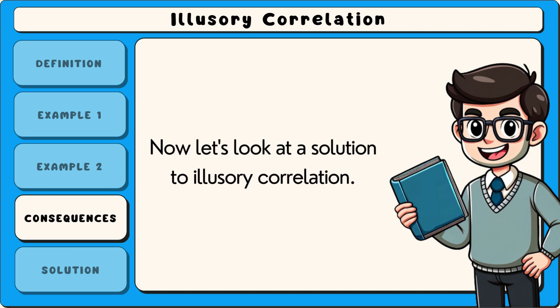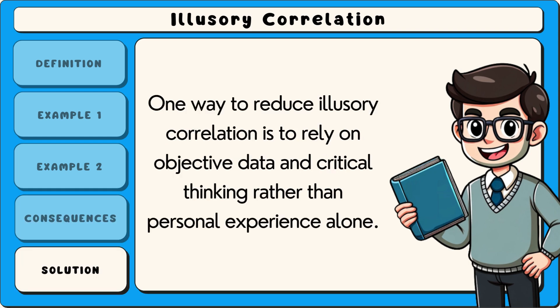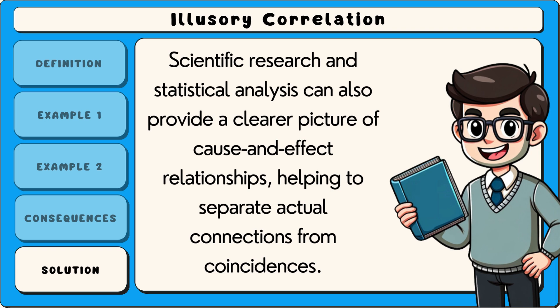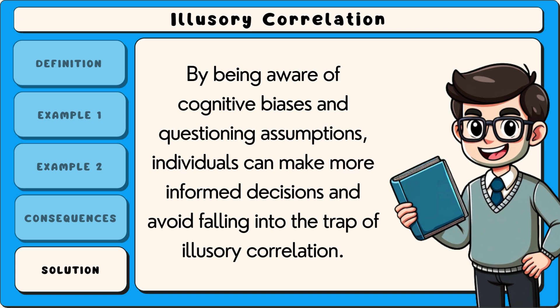One way to reduce illusory correlation is to rely on objective data and critical thinking rather than personal experience alone. Keeping track of information systematically, such as recording all instances of joint pain rather than just on rainy days, can help reveal whether a real pattern exists. Scientific research and statistical analysis can also provide a clearer picture of cause and effect relationships, helping to separate actual connections from coincidences. By being aware of cognitive biases and questioning assumptions, individuals can make more informed decisions and avoid falling into the trap of illusory correlation.